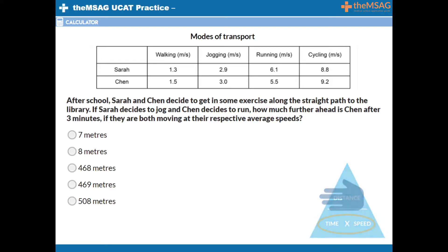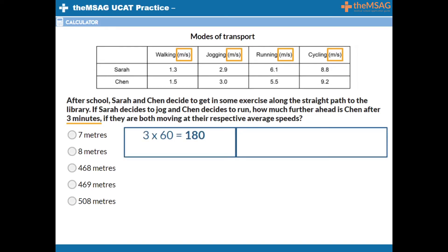Be careful though — the time is given as three minutes, but the speeds are given in meters per second. Multiply the three by 60 to convert minutes into seconds. Three multiplied by 60 equals 180, so they both have 180 seconds to either jog or run. We know that Sarah is jogging at 2.9 meters per second and that Chen is running at 5.5 meters per second.